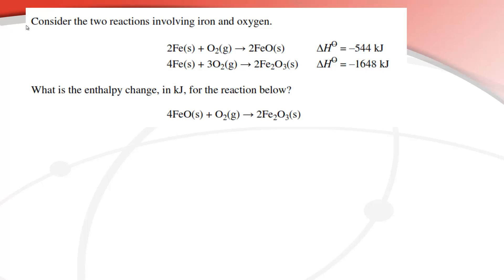So let's try one more example using Hess's law. Consider the two reactions involving iron and oxygen, these two reactions here. What is the enthalpy change in kilojoules for this reaction below here? So the first thing we have to do is we have to have a look if the species are the correct side of the arrows, and we can see that in the top equation here, this FeO, this iron oxide, is on the right side when it should be on the left side.